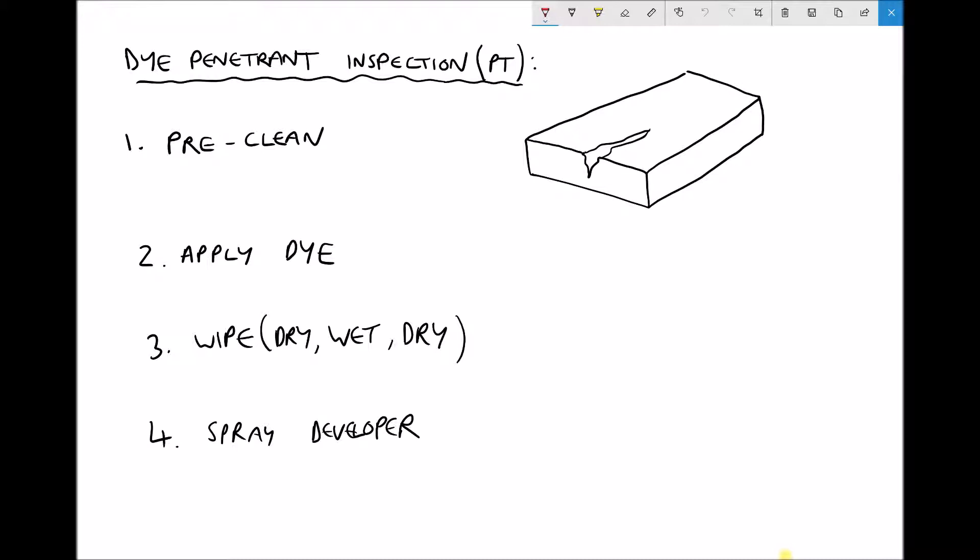Once we've cleaned the component we apply the dye and normally the dye is applied as a spray or a liquid. There's various different dyes that are available. Some of them are colored and can be seen by the naked eye, whereas others are fluorescent and require UV light in order to interpret the results. Let's assume for the purpose of this example that we're using a colored dye and we spray that colored dye onto the surface of the material.